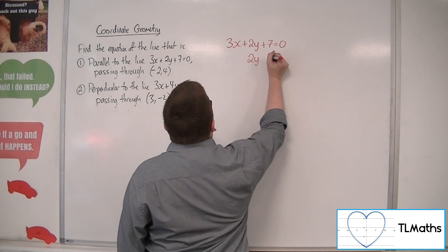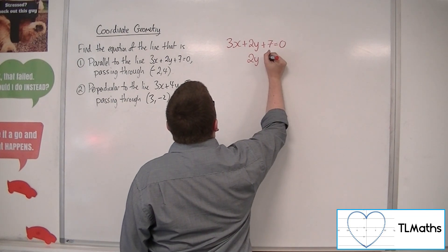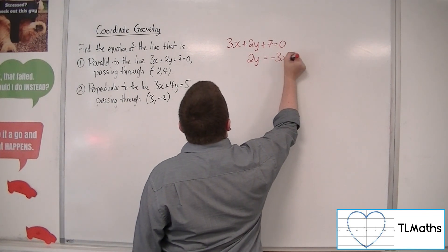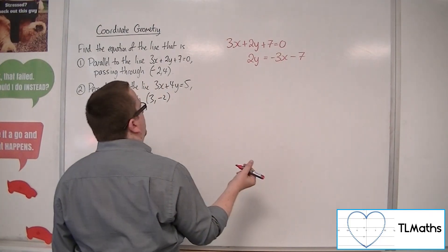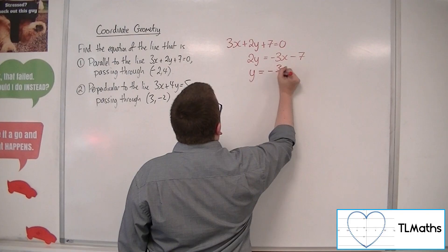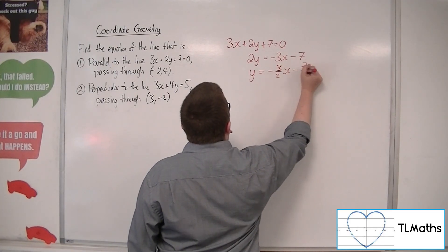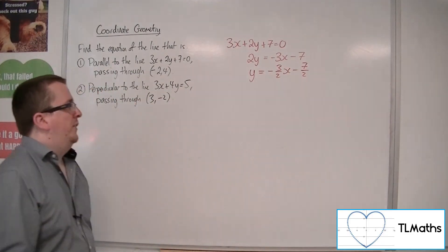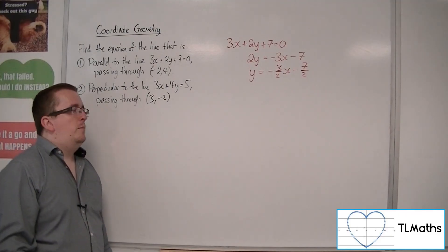So if I subtract the 3x and the 7 from both sides, I can get that. Then dividing through by 2, I'm going to get minus 3 halves x minus 7 halves. Now the minus 7 halves I don't really need. All I really need is that minus 3 halves.